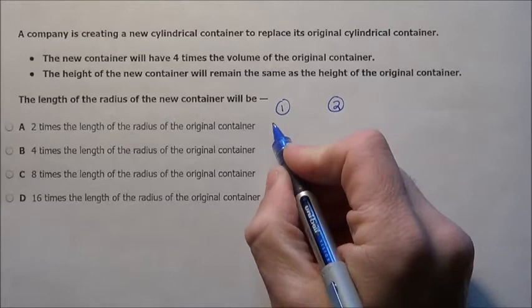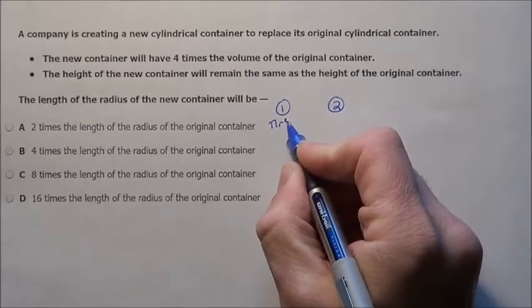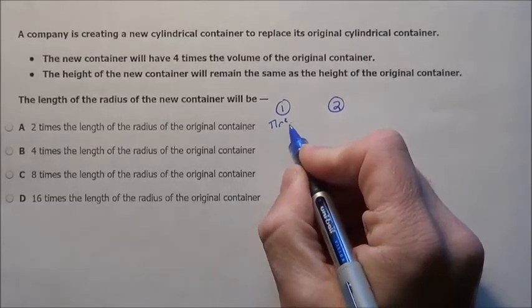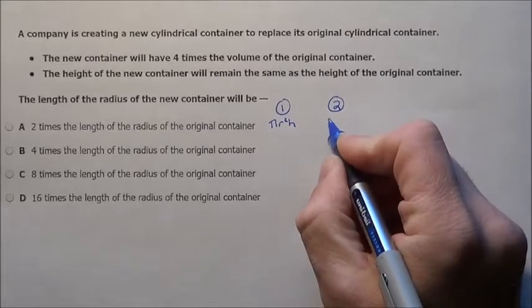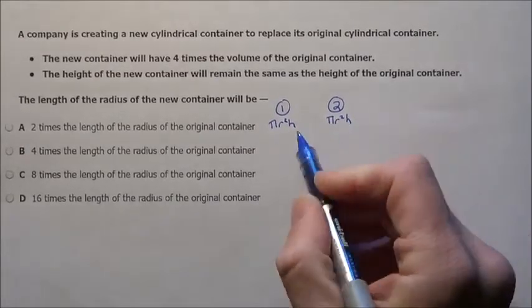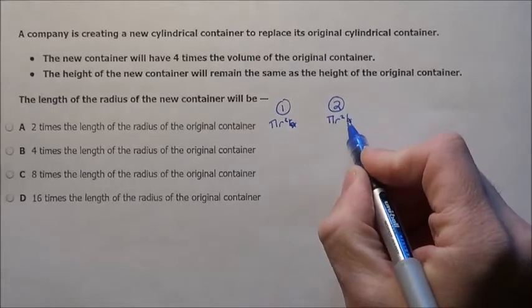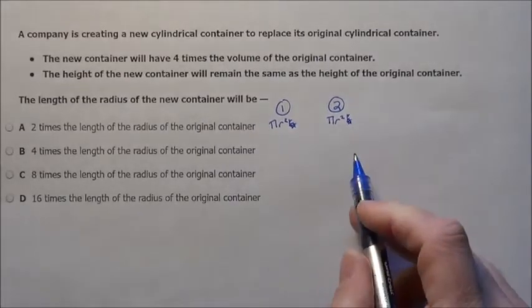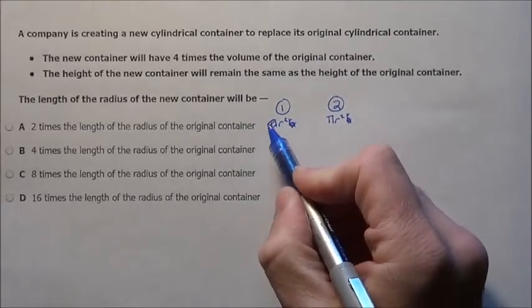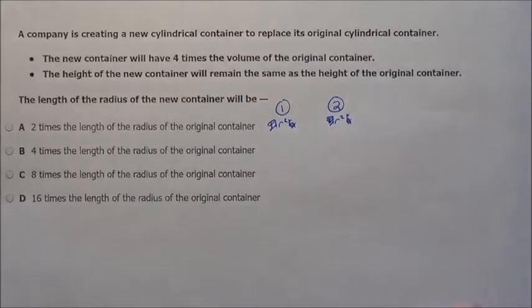Now to find the volume, it's pi r squared, the area of the bottom, times the height. It's going to be the same here, pi r squared times the height. Now the height doesn't change, so that h stays the same. So we're not going to mess with that. We can sort of just eliminate pi because pi is not going to make any difference.